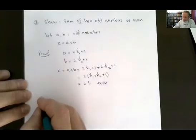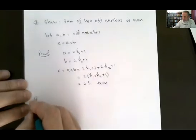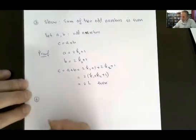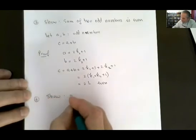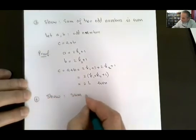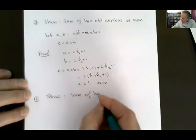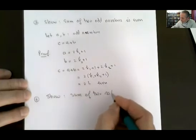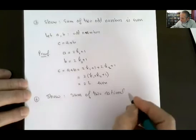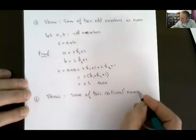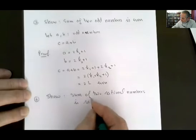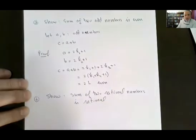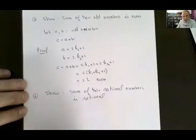Example number four: sum of two rational numbers is rational. Sum of two rational numbers is rational.